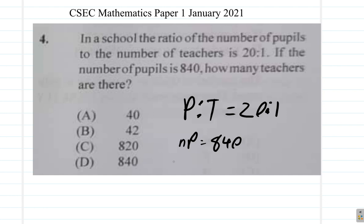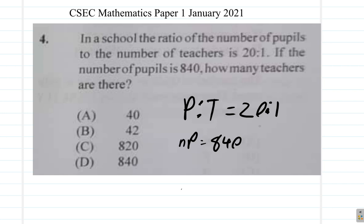Here, the number of pupils is represented by 20, and the number of teachers is represented by 1. So this shows that there are 20 pupils to every 1 teacher. Therefore, the number of teachers is 1/20th of the number of pupils, so you divide by 20. You have 840 divided by 20.